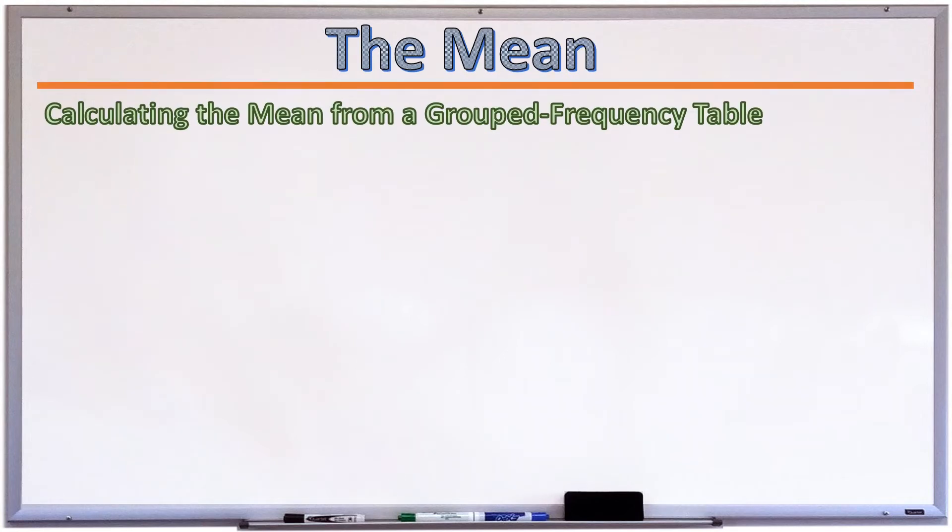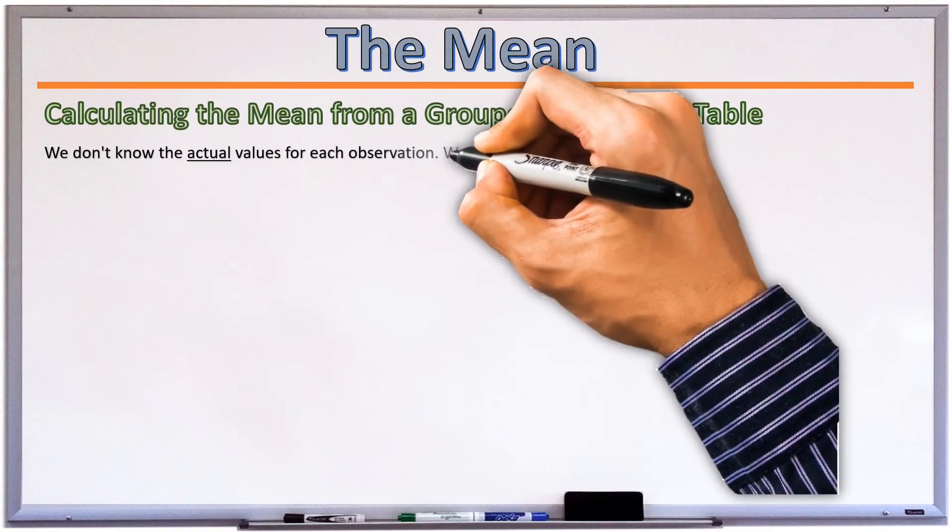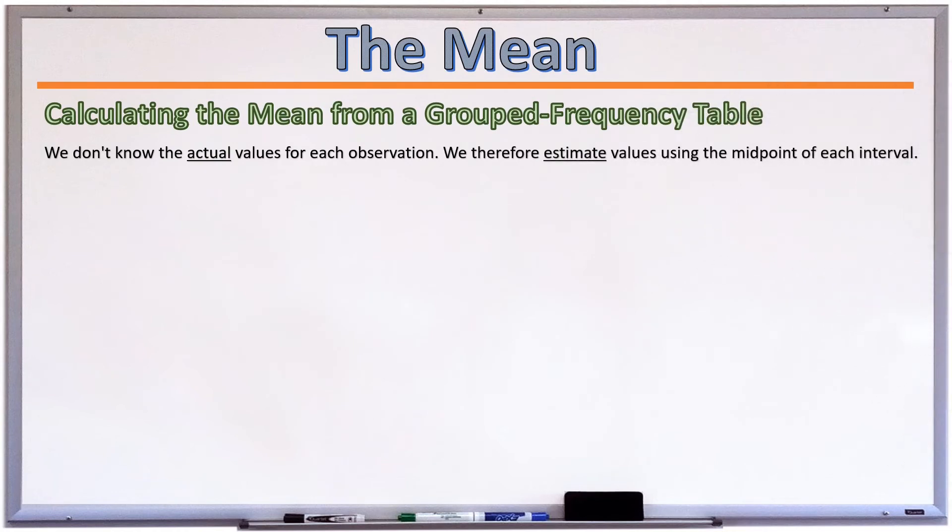When given a grouped frequency table, it was mentioned earlier that we don't know the actual values for each of the observations. All we know is the range into which each of the observations fell. Therefore, the mean cannot be calculated exactly from a grouped frequency table. It must be estimated.